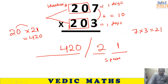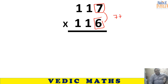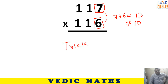Look at this example — can we apply the trick here? We cannot. 7 plus 6 equals 13, which is not equal to 10. So the trick does not work and cannot be applied in this case. Be careful.